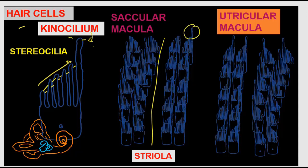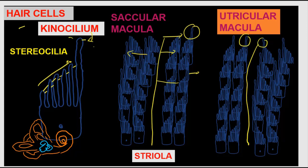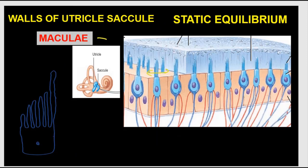The placement of hair cells differs between the utricle and saccule. In the saccular macula, the kinocilia are oriented outwards from the striola on both sides. In the utricular macula, the kinocilia are oriented inwards, toward the midline. Above the macula, there is a gelatinous glycoprotein layer called the otolithic membrane, secreted by supporting cells. This membrane has calcium carbonate crystals on top called otoliths — meaning 'ear stones' or otoconia — approximately 0.5 to 10 micrometers in size.